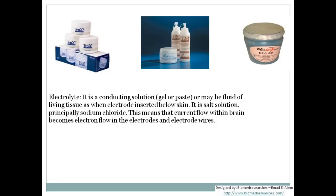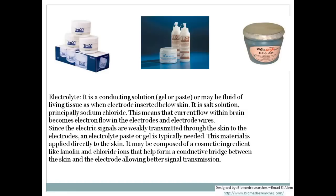The electrolyte ensures that current flow within the brain becomes electron flow in the electrodes and electrode wires. A very common paste used is the 10-20 paste, widely used by many manufacturers as a conductive solution. Since electrical signals are weakly transmitted through the skin to the electrodes, an electrolyte paste or gel is typically needed. The material is applied directly to the skin and may contain ingredients like lanolin and chloride ions to form a conductive bridge between the skin and the electrode for better signal transmission.